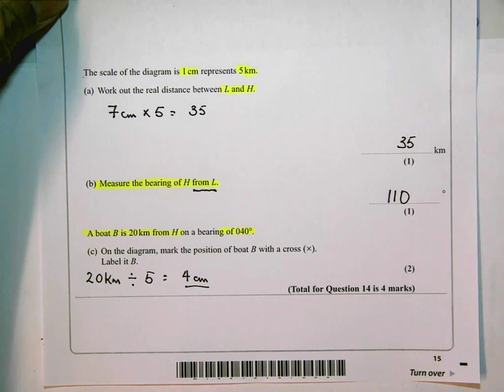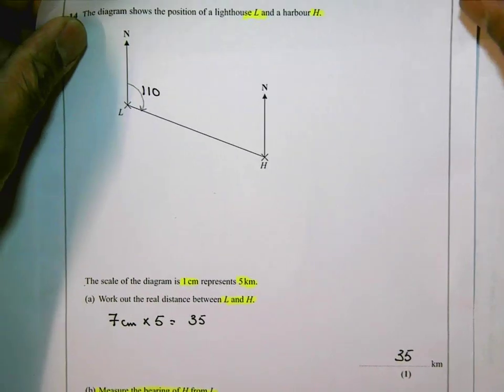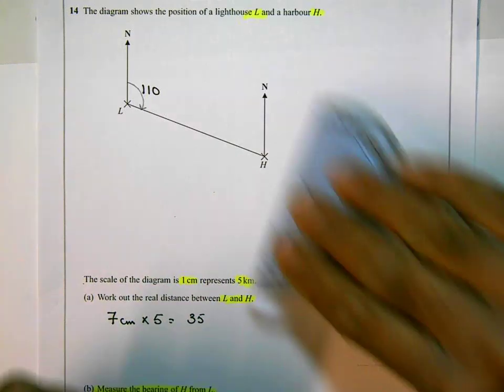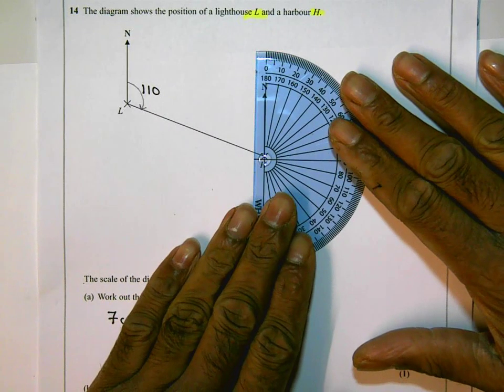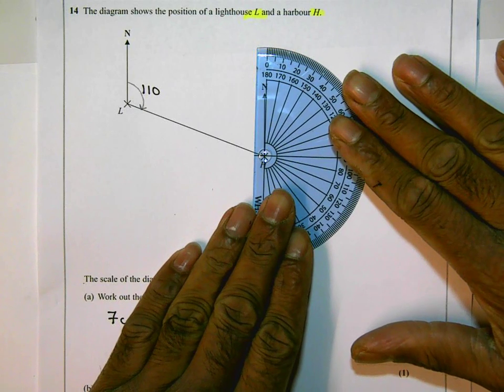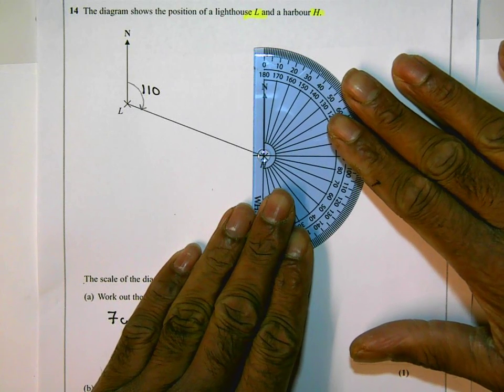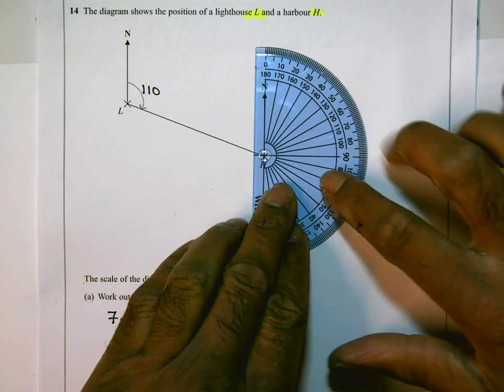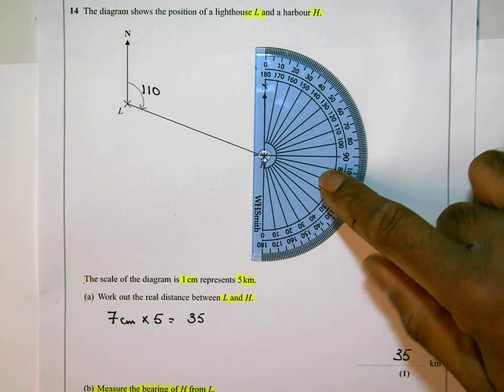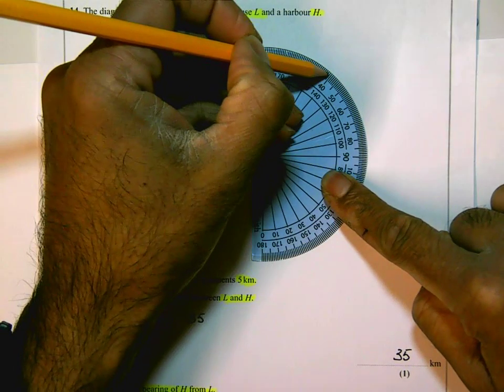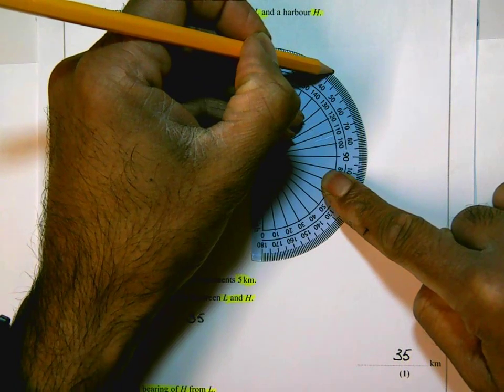And again, just like before, line it up, line it up exactly, and make sure that the zero line on the protractor is bang on north. And if it's 40 degrees, measuring the angle from the north, 40 degrees is over there, and I'll put a little marker, just a little dot, and make sure I can see. Okay, yep, so that's at 40 degrees.